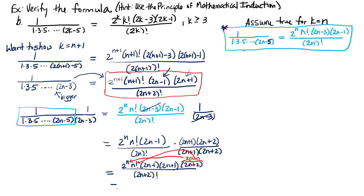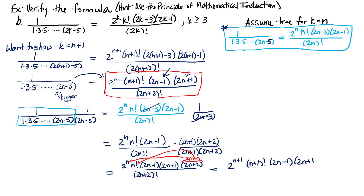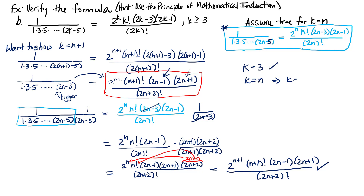This gives us 2^(n+1) times (n+1)! times (2n-1) times (2n+1) over (2n+2)!, which is exactly what we wanted to show. So the left-hand side equals the right. Since k=n working implies k=n+1 must work, and we know it works for k=3, by induction the equality holds for all k greater than or equal to 3.